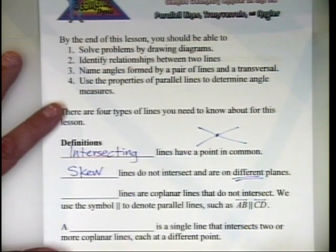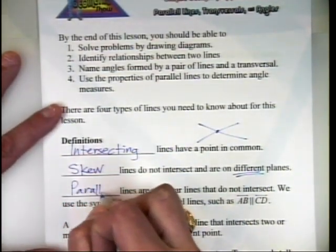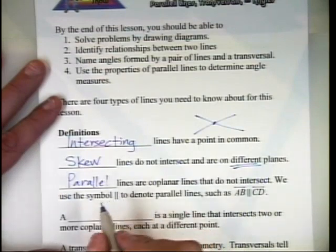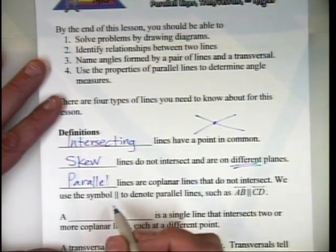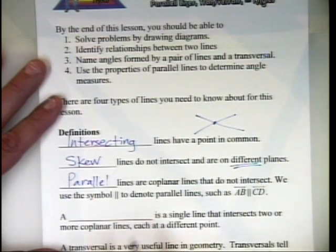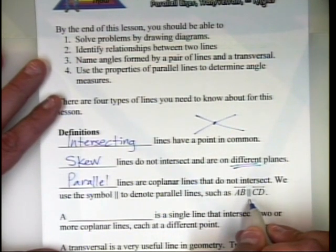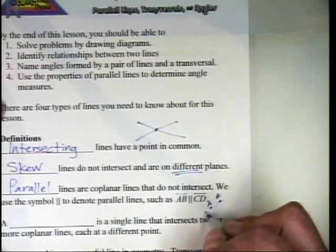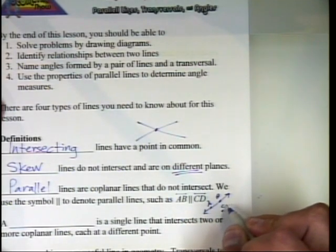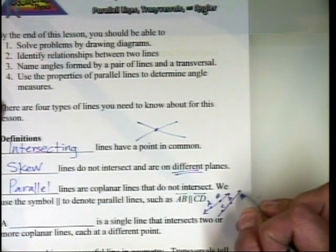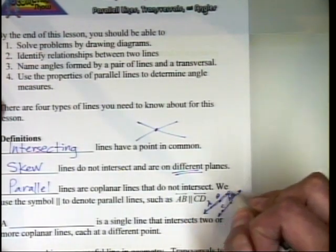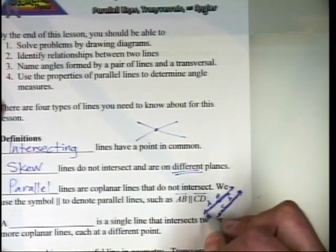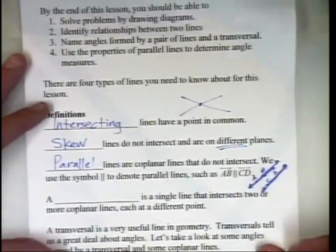Parallel lines are coplanar lines — that means they're on the same plane — and they do not intersect. We use a special symbol to denote that: vertical lines that are parallel, such as line AB is parallel to line CD. If I draw line AB and line CD, they'll be parallel if they have the same slope, meaning as they extend into infinity in both directions, they never intersect.